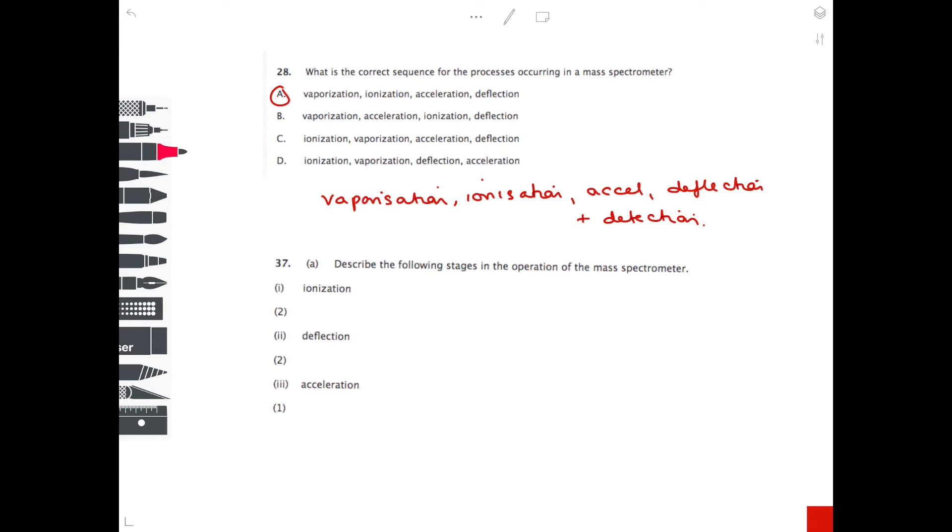So with acceleration, remember that the positively charged ions are sped up. They are accelerated away from the ionisation chamber, and this is to ensure that they have the same kinetic energy.